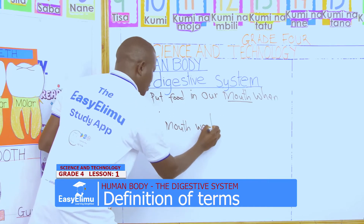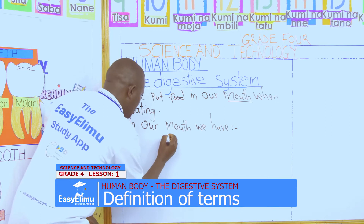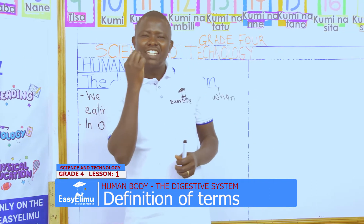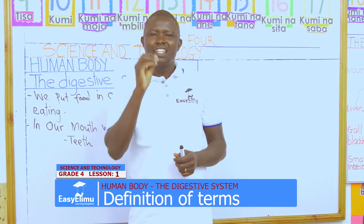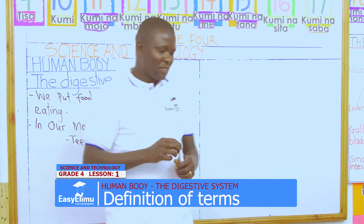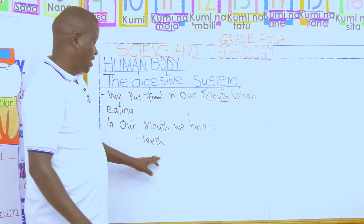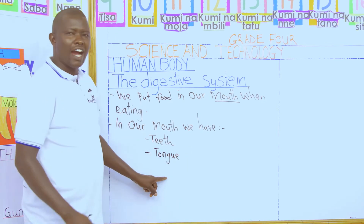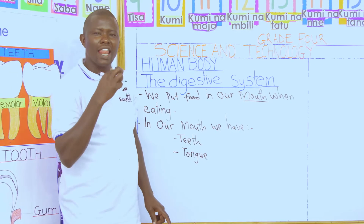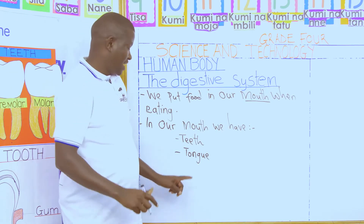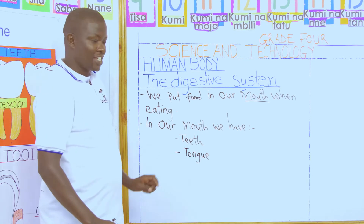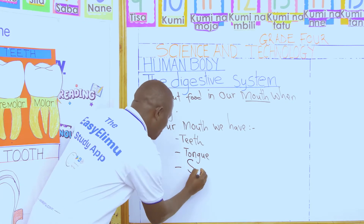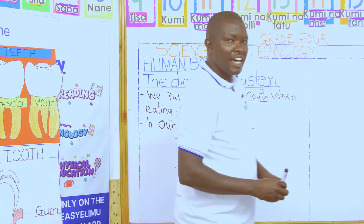In our mouth we have the following. We have teeth — the white bones which appear in our mouth. Then we have the tongue. And also inside the mouth there is the liquid part which we call saliva. Those are the three things that are found inside our mouth.